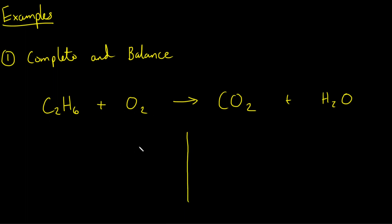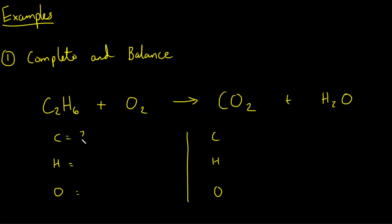To balance combustion equations, I recommend balancing in a particular order: first the carbons, then the hydrogens, and lastly the oxygens. The reason is that oxygen appears by itself in the reaction and is easy to balance at the end. Let's make a little table to count atoms on both sides. Carbons: two on the left, one on the right. Hydrogens: six on the left, two on the right. Oxygens: two on the left, three on the right. This is definitely not balanced, so let's fix it.